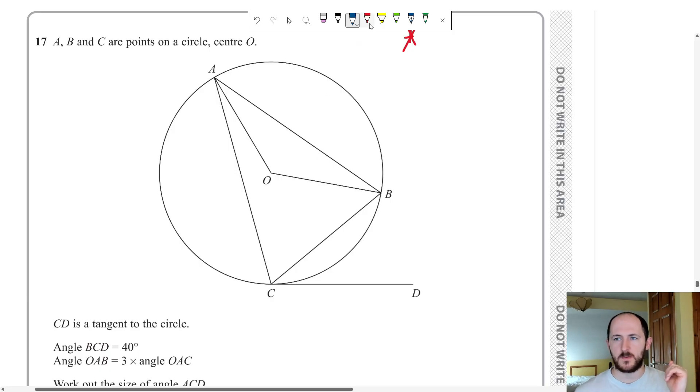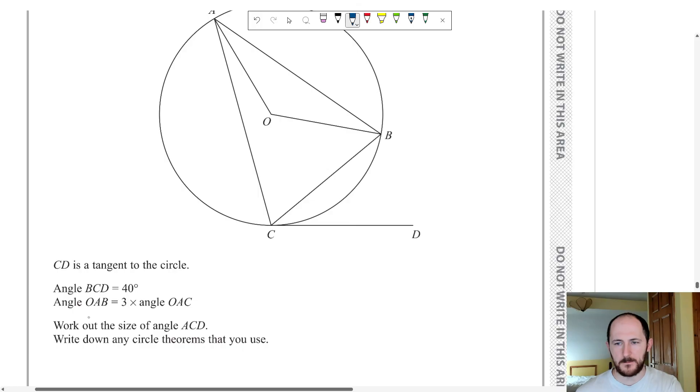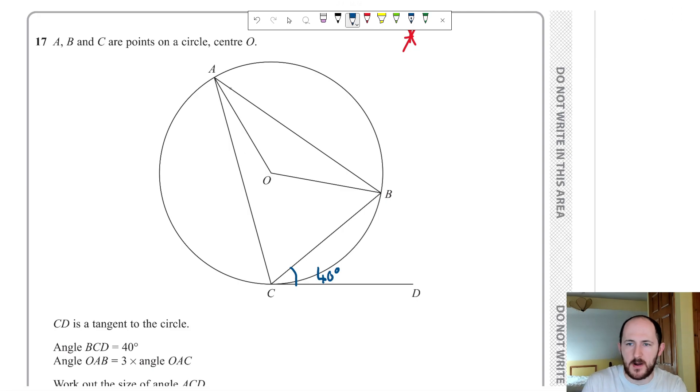So how do I approach a circle theorem question? Well, what I would do is I would start by labelling the information they've given me. So they give us that CD is a tangent, wonderful. You don't have to use that, but you can use that in this question. It says BCD, so BCD, this angle here is 40 degrees. So let's label that. And it says the angle OAB, so OAB, this part of the angle over here. In fact, I might label it as two different colours. That is three times OAC. So I could call it like X and 3X. And they want us to work out the total angle ACD. So they want us to work out, give me another, let's say this one. So because I already have the angle BCD, all I really need to work out is ACB. If I work out ACB, then I'm done.